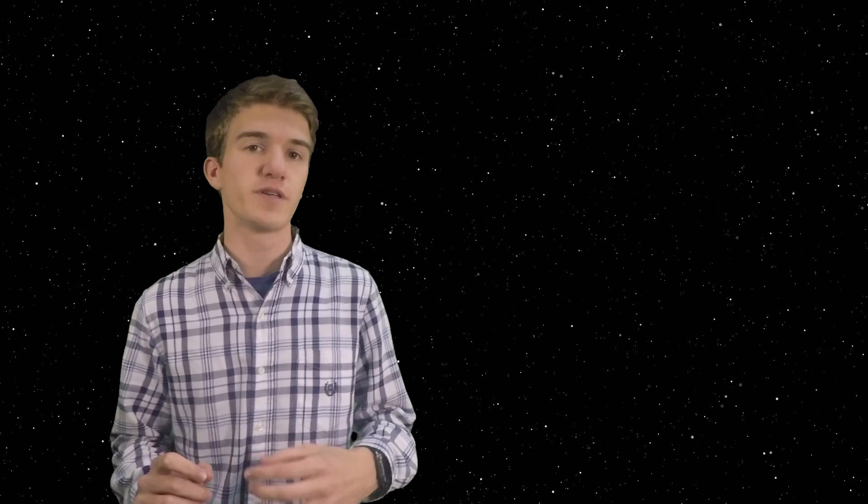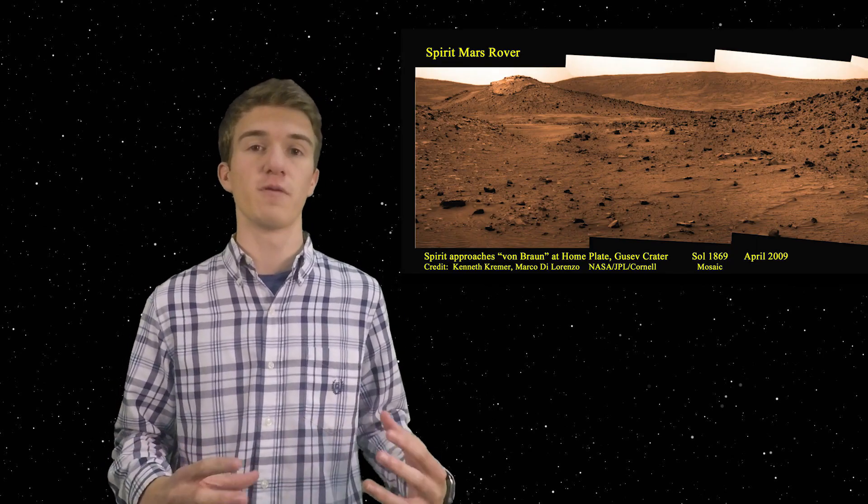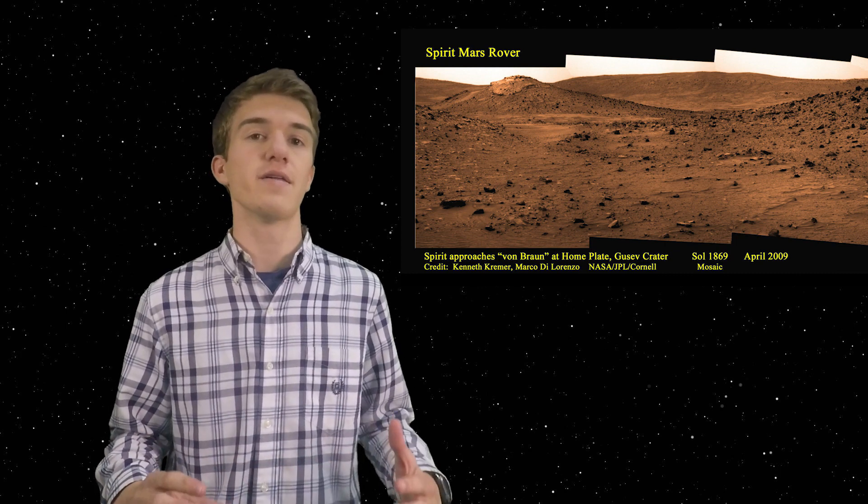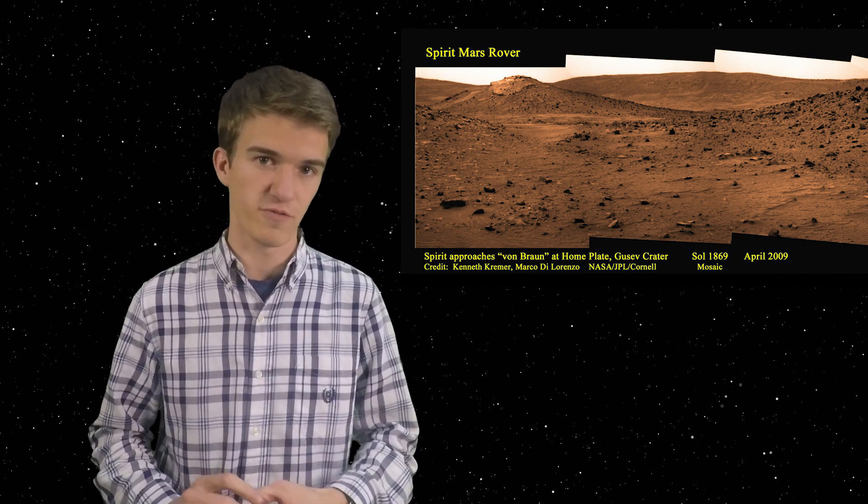So now that we've covered Opportunity, let's talk about Spirit. As I mentioned before, Spirit landed in Gustav Crater, which is actually very different than where Opportunity landed. Gustav Crater is incredibly rocky, hilly, and filled of a terrain that would be almost impossible for a rover to traverse.